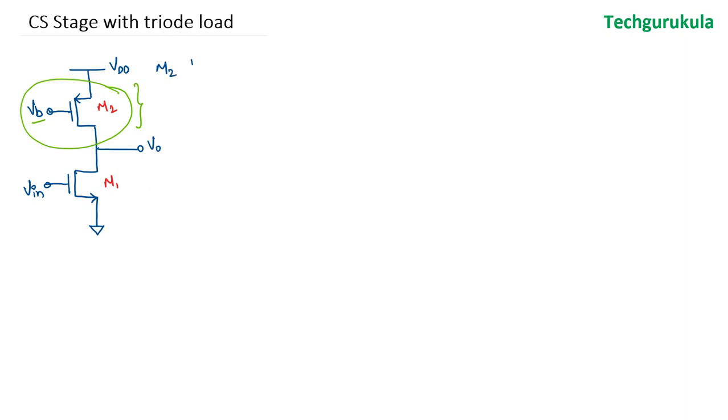So M2 should be in triode region, which means the VDSP magnitude is going to be less than magnitude of VGSP minus magnitude of VTP. And M1 should be in saturation region so that this will be the primary transistor which will actually amplify.